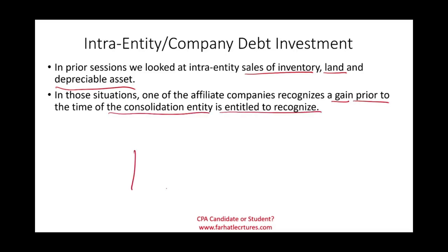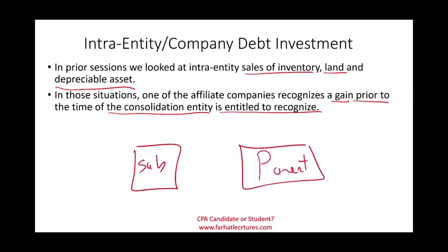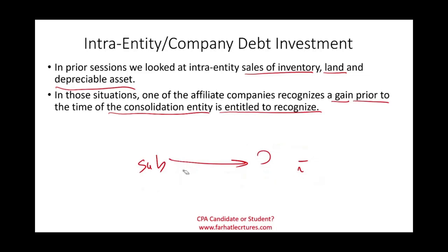Simply put, when we have a sub and a parent and they exchange land, inventory, or whatever they exchange, a gain was recognized between the two entities, but that gain cannot be recorded or recognized on the consolidated statement because it was not sold to an outside party.